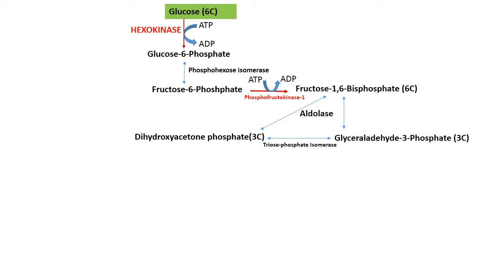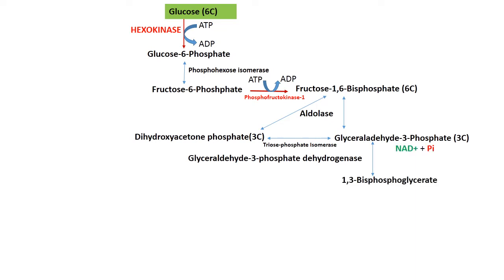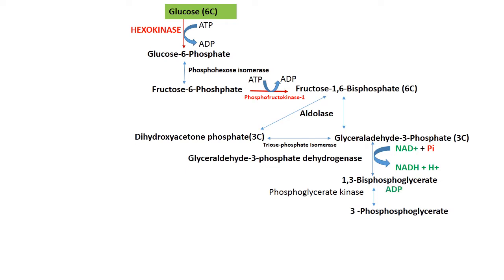The conversion of dihydroxyacetone phosphate to glyceraldehyde-3-phosphate is catalyzed by triose phosphate isomerase. Glyceraldehyde-3-phosphate is then acted upon by glyceraldehyde-3-phosphate dehydrogenase — an oxidoreductase (class 1 enzyme) — which requires NAD as coenzyme. NAD is reduced to NADH, and inorganic phosphate is incorporated, converting glyceraldehyde-3-phosphate to 1,3-bisphosphoglycerate. This is then acted upon by phosphoglycerate kinase to produce 3-phosphoglycerate, and here one ATP is produced.